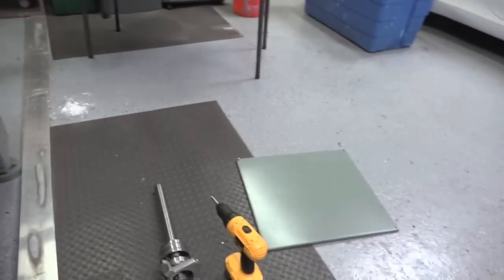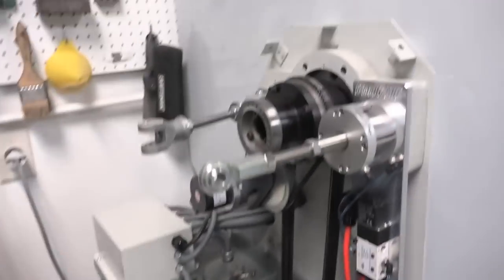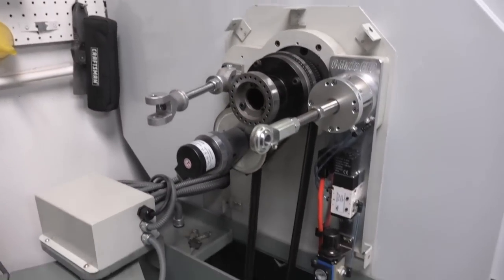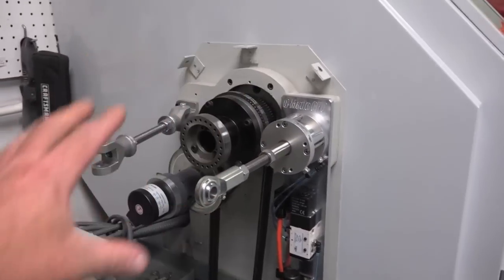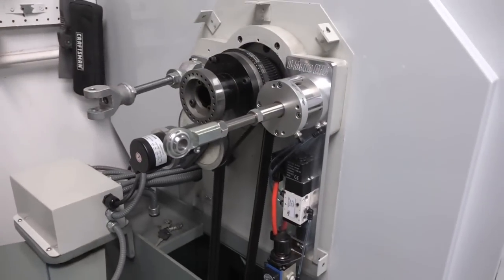Alright, let's get the cover back reinstalled. Move the cabinet over. We got the enclosure back on there, and then hook everything else up.